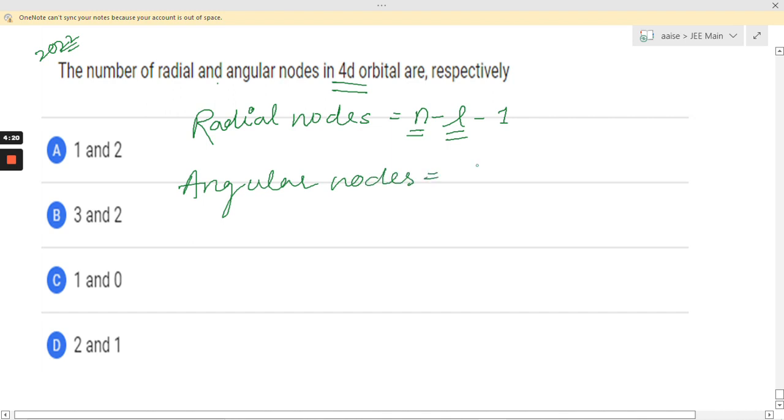So here for 4d orbital we can see the principal quantum number n equals 4 and azimuthal quantum number l equals 2 for d orbital. So just after putting the value we are going to get the radial nodes and the angular nodes.